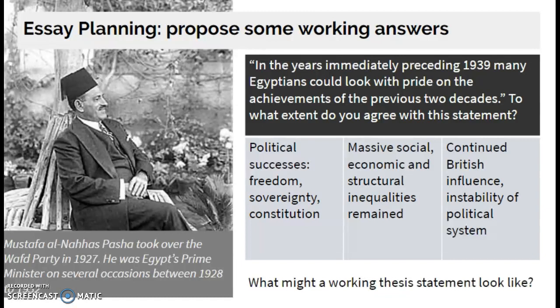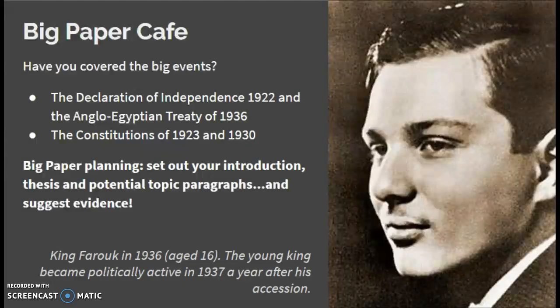However, most Egyptians remain poor, literacy levels remain low, and public health care is perhaps not as good as it could be — so those massive social and economic inequalities remain. The ultimate aim of Egypt in this time period is independence and freedom from the British, and sadly they don't manage to achieve that. As you plan your essay, think about the big events: the Declaration of Independence in 1922, the Anglo-Egyptian Treaty of 1936, and the two constitutions of 1923 and 1930. You need to know this material to answer any question about Egypt during this time period.